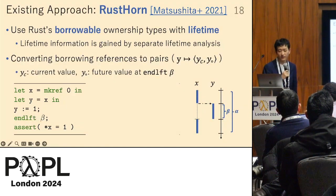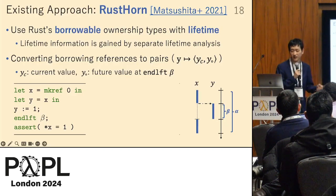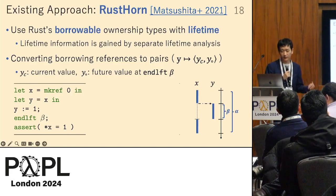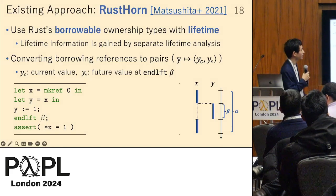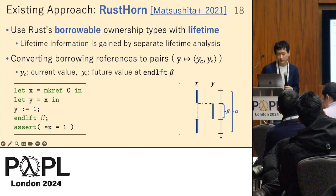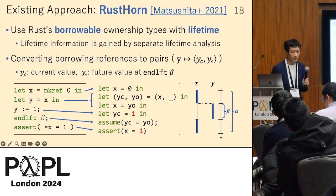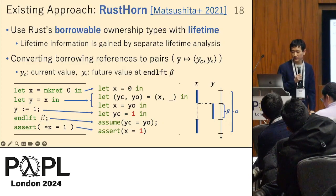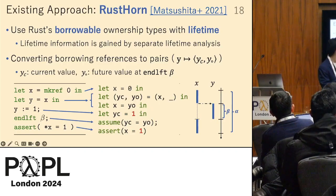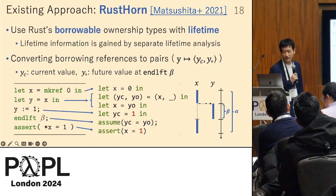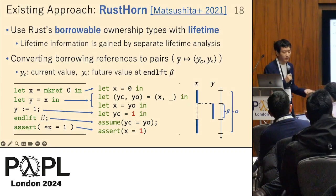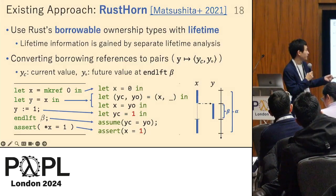Once typed, Rust can distinguish whether each reference is a borrowed reference or not. Using this borrowing information, RustHorn conducts verification by eliminating all references by converting them to pairs. The borrowing reference y is converted to a pair of yC and yO, where yC is a normal integer representing the current value of y.